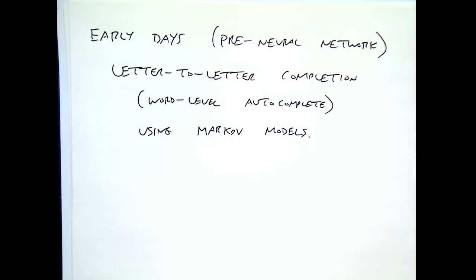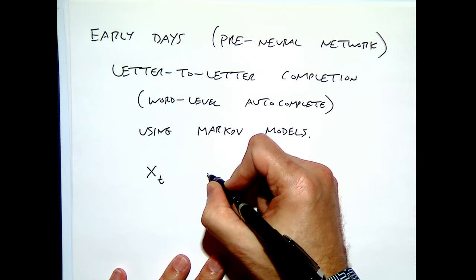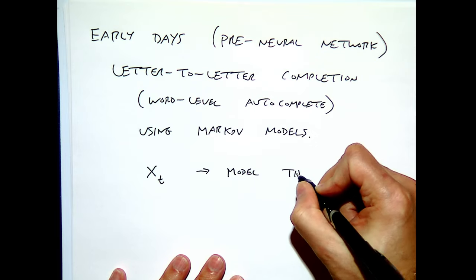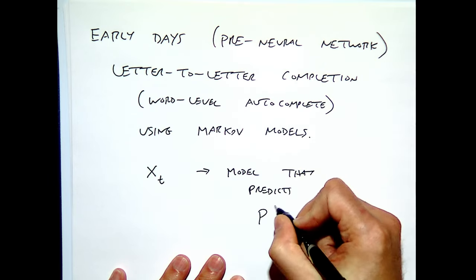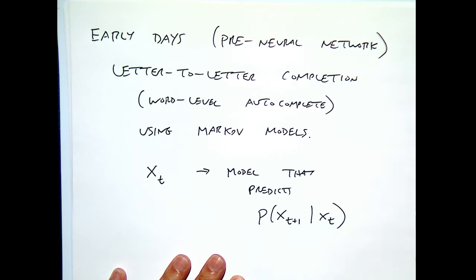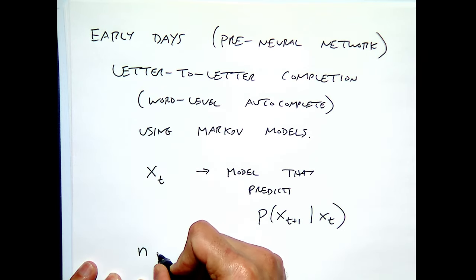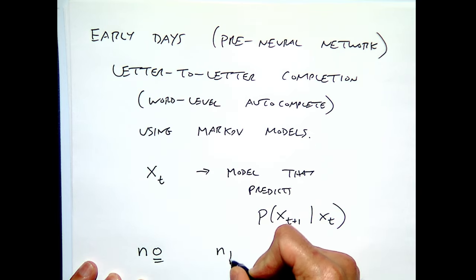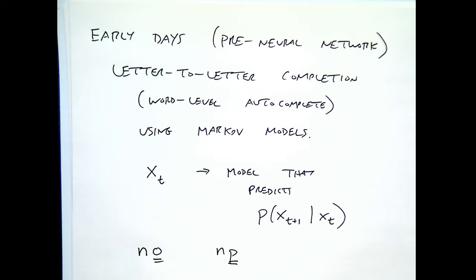A Markov model basically says: if the letter at time t is x(t), we learn a model that predicts the probability of x(t+1) given x(t), based on all the probabilities seen from a huge corpus of training data — like Project Gutenberg stories, the dictionary, or an encyclopedia. This will probably learn that 'n' followed by 'o' is more likely than 'n' followed by 'p', but it won't do a great job of creating really intelligent words.